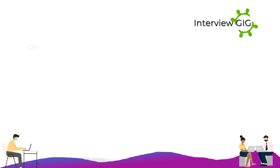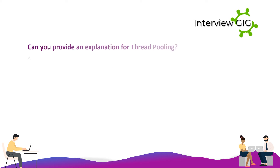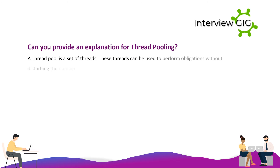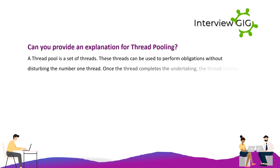What is thread pooling? A thread pool is a collection of threads. These threads can be used to perform tasks without disturbing the primary thread. Once a thread completes its task, the thread returns to the pool.